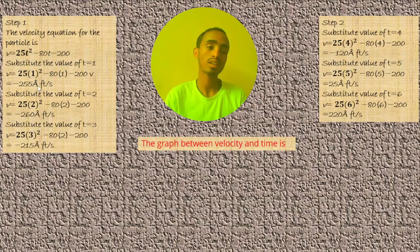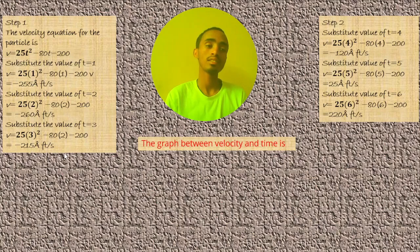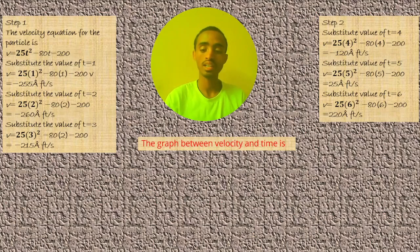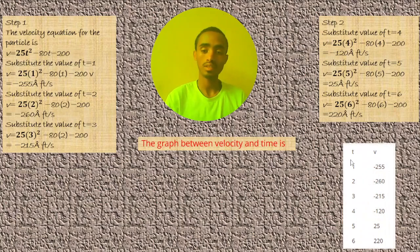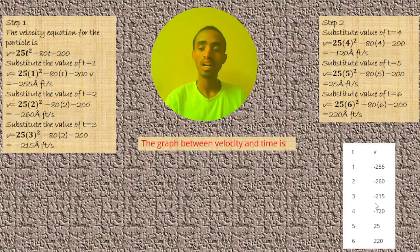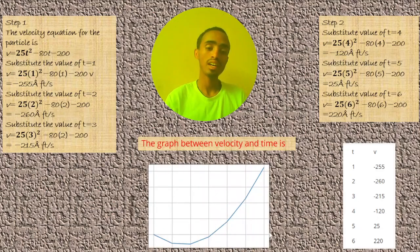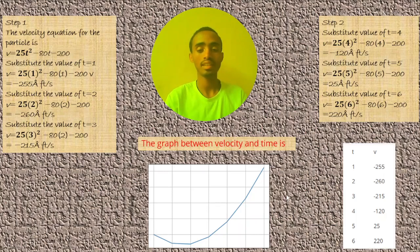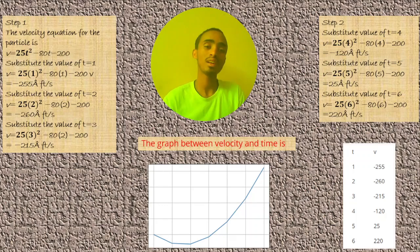When you substitute t = 1, you get approximately −193 feet per second. Substituting t = 2 gives another value, t = 3 gives another, t = 4 gives −120, and t = 5 and t = 6 give 25 and 220 respectively. After computing these values, you draw the coordinate axis — velocity in the vertical direction and time in the horizontal direction — and join the points to plot the velocity versus time graph.